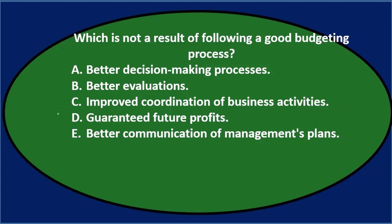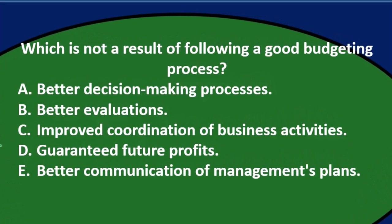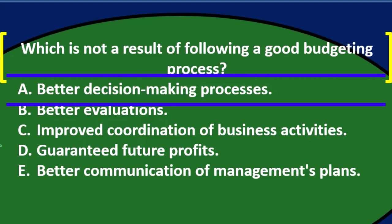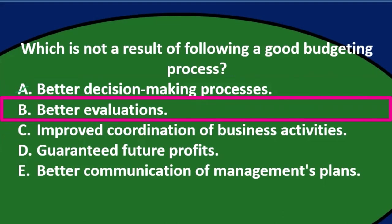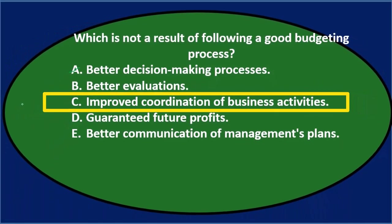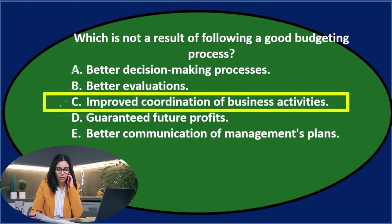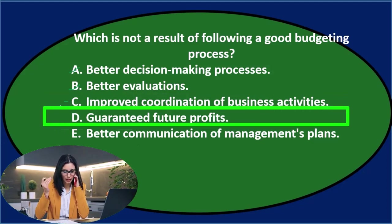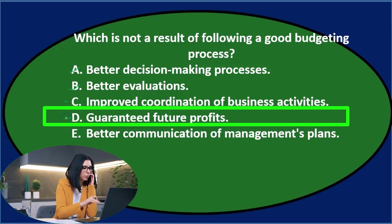Let's go through this again using the process of elimination. Which is not a result of following a good budgeting plan? A: better decision-making process — that's probably what we're doing here. B: better evaluations — we're comparing budget versus actual, so hopefully that improves future evaluations. C: improved coordination with business activities — probably, I'll keep that open. D: guaranteed future profits — we'd hope to budget for future profits, but does it guarantee them? I'll keep that open. E: better communication of management's plans — hopefully the budget does that.